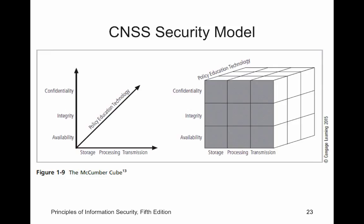CNSS is a certificate offered at Rose State — it's a federal certificate, but it is going away and being replaced. Here we have an example of confidentiality, integrity, and availability along with storage, processing, and transmission. They all work together, and in conjunction with them would be our policies, our education, our technology — just different ways of looking at it.